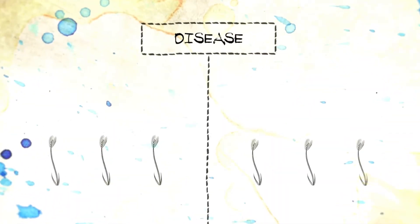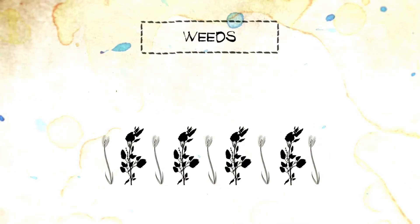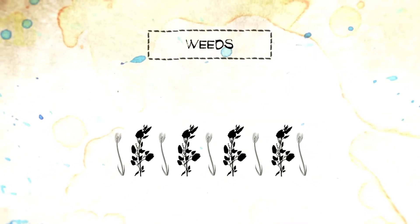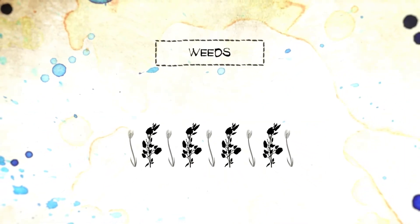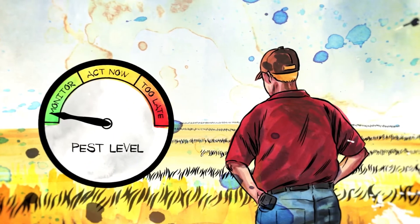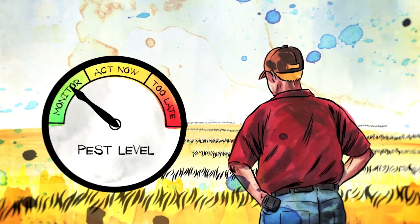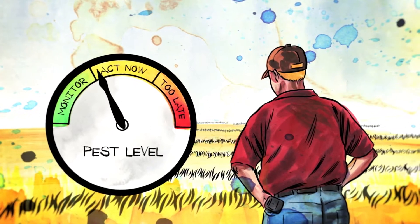Crops also need protection from disease, insects and weeds. Every year a significant amount of food crops are lost due to pests. When pest infestations reach a certain level, farmers often use pesticides to protect their crops and ensure a good harvest.